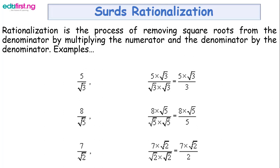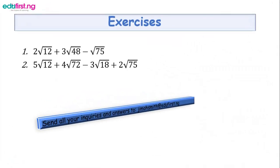We have some exercises for you to try. Number 1: 2 root 12 plus 3 root 48 minus root 75. Number 2: 5 root 12 plus 4 root 72 minus 3 root 18 plus 2 root 75. Try them and see what you get. If you have further questions on things you don't understand, you can always email me.